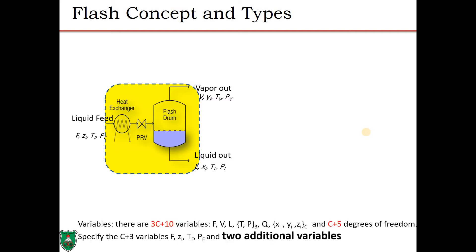We have C plus 5 degrees of freedom. If we specify the feed stream, which has C plus 3 variables, we end up with two additional variables that we need to specify to make this system determinate — meaning it has a unique solution. These two additional variables lead to several types of flash calculations.